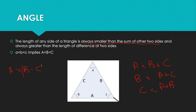If b is one side and c is the other side, the length of the third side will always be greater than the difference of those two sides. Similarly, b will always be greater than the difference of a and c, and c will always be greater than the difference of a and b.